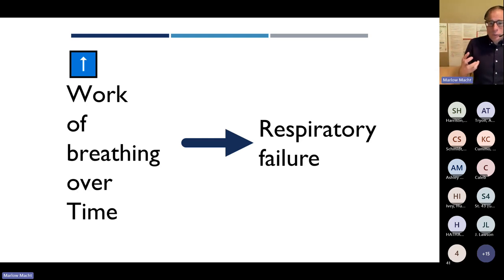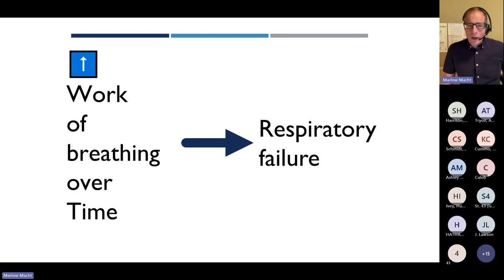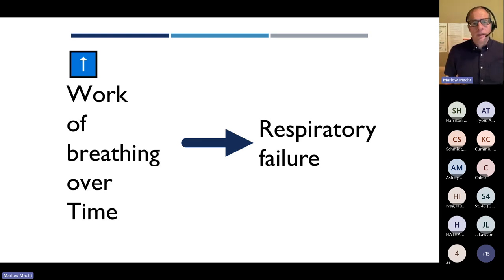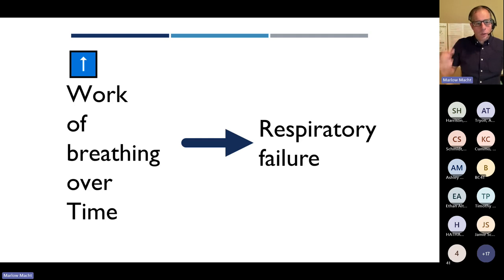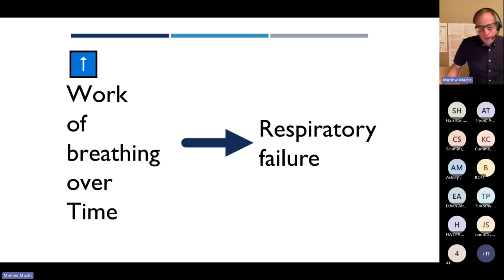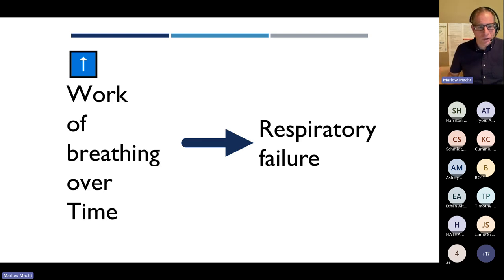This applies to a transport crew giving handoff to the emergency physician, and to a first response crew giving report to the transport crew. The numbers are helpful, but the most helpful things in describing work of breathing are descriptive: one-word dyspnea, tripod position, grunting and retractions — all things that paint a specific picture. Pulse ox and end-tidal CO2 matter, but you can manage a patient with respiratory distress without those adjuncts just by looking at the work of breathing. The adjuncts are just that — adjuncts.